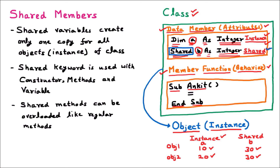Just like normal methods can be overloaded, shared methods can also be overloaded. To summarize the shared members: first, shared members have the same value across all objects — only one copy is shared. Second, the 'Shared' keyword is used to identify them — before a constructor it's a shared constructor, before a method it's a shared method, and before a variable it's a shared variable. Shared methods can also be overloaded just like regular methods.